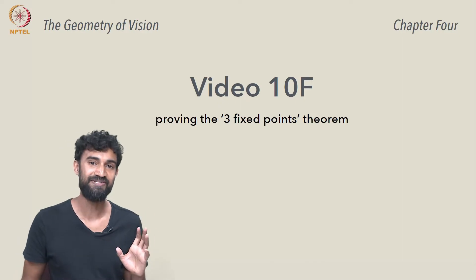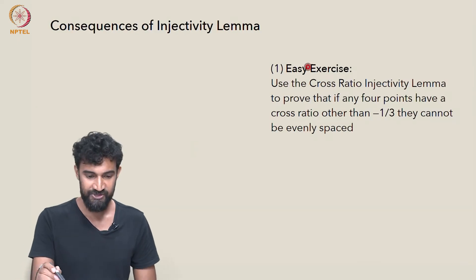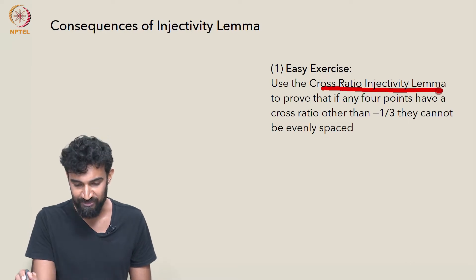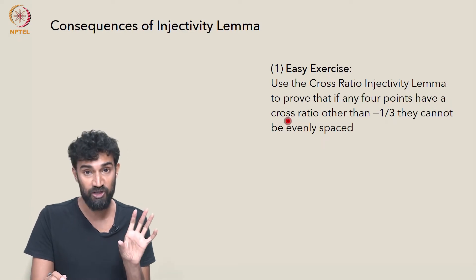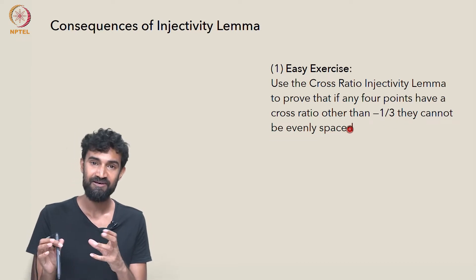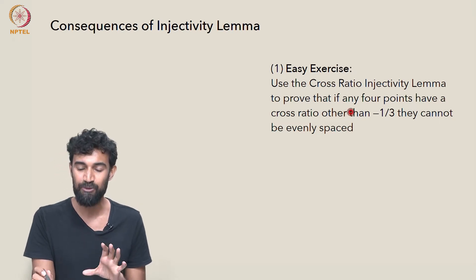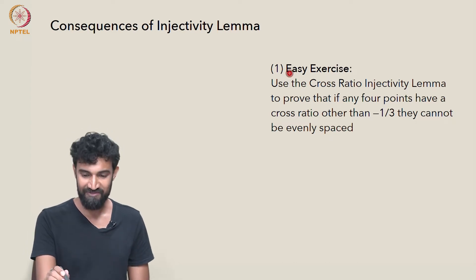So let's see some consequences of the cross-ratio injectivity lemma. And first, an easy consequence, relatively speaking. So I'm actually going to give it as an exercise. Can you use the cross-ratio injectivity lemma to prove that if any four points have a cross-ratio other than negative one-third, then they cannot possibly be evenly spaced, no matter what perspective you view them from. That's a claim I made earlier. Can we now justify that claim using the cross-ratio injectivity lemma? So I'll leave that as an exercise.